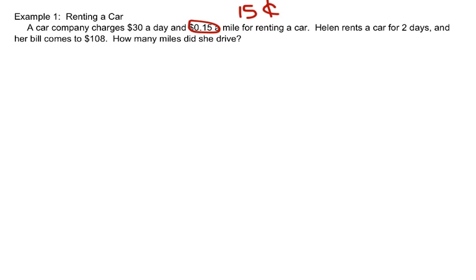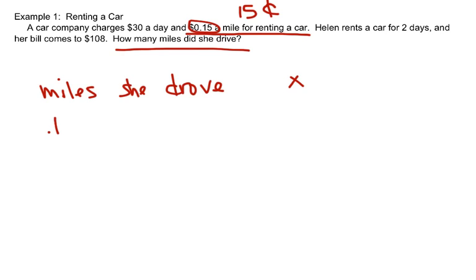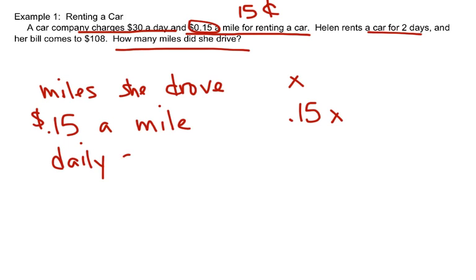So the first thing is, what's the variable? What are you trying to find? We're trying to find how many miles she drove. So the miles she drove, we're going to call that X. You could also call it M for miles. So what are some other things happening in the problem? She's getting charged $0.15 a mile. How do you write that algebraically? It should be .15X, because X is the number of miles she drove. The other thing that's happening is she's getting charged $30 a day for two days.